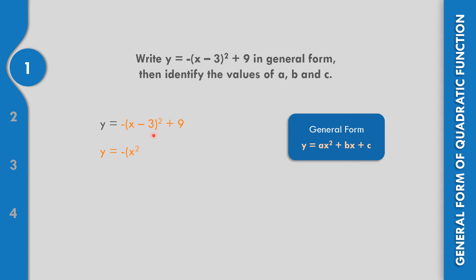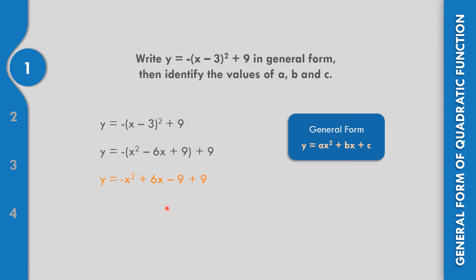Negative 3 times negative 3 is positive 9, then bring down the plus 9. Next, distribute the negative sign to the parentheses: negative times x squared gives negative x squared, negative times negative 6x gives positive 6x, and negative times positive 9 gives negative 9. Bringing down the 9, we get negative 9 plus 9 equals 0. So the general form is y equals negative x squared plus 6x.